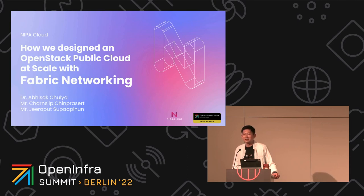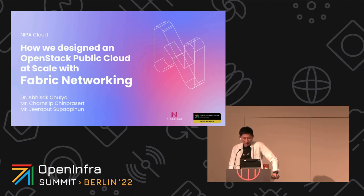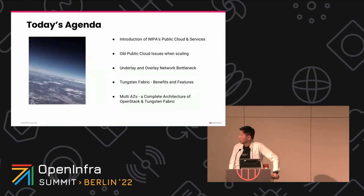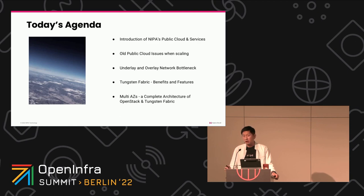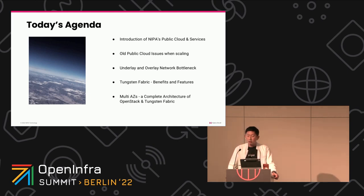This is the last session of the conference so we don't have to rush. Today's agenda: we'll talk about what NIPA Cloud is doing, what kind of public cloud and services we provide, what happened when we tried to scale the old public cloud, the bottlenecks with underlay and overlay networking, why we switched to Tungsten Fabric, what the benefits and features are, and then I'll show the multi-availability-zone architecture with OpenStack and Tungsten Fabric.